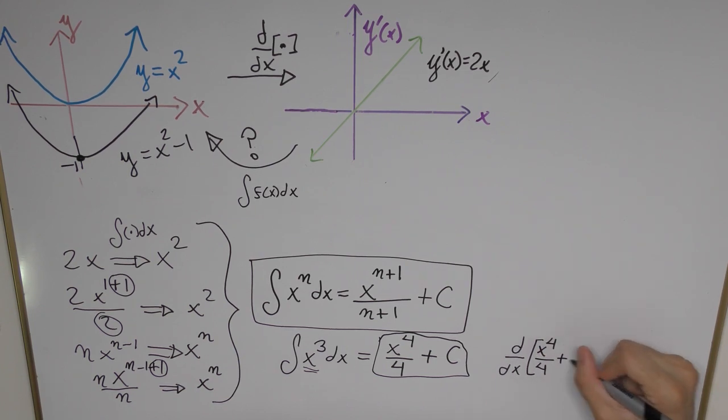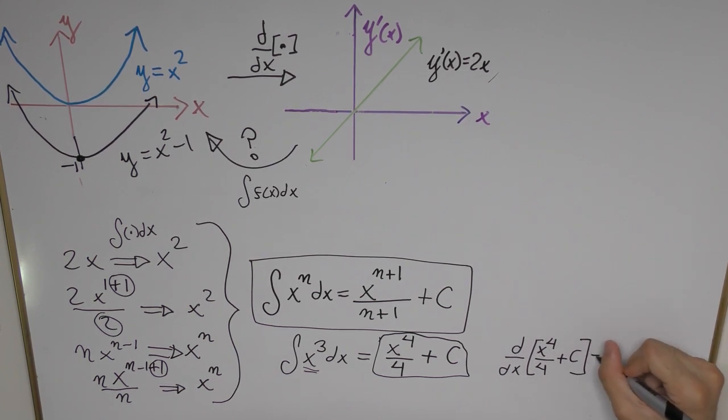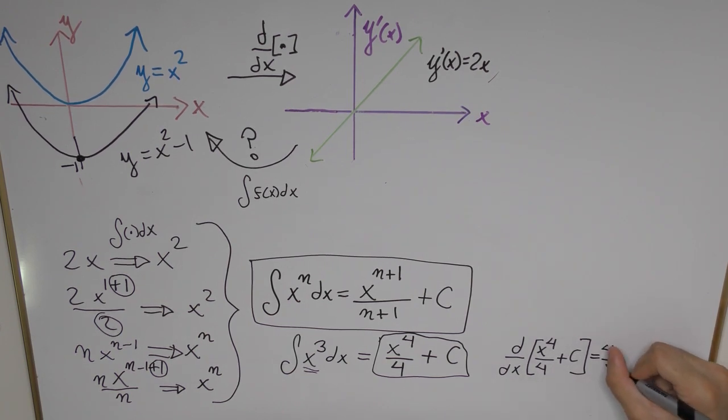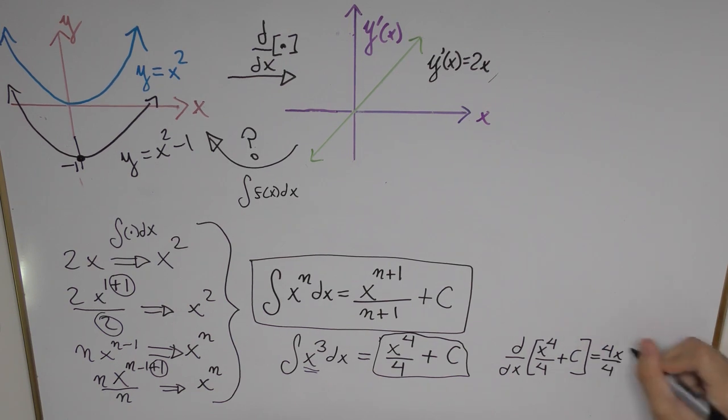So let's apply the derivative operator to that. I'm going to differentiate x to the power 4 divided by 4 and now the 4 is going to come down, that's going to leave us with 4 divided by 4, and then we're going to reduce the power by 1 unit so that's going to become 3.